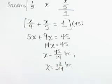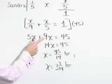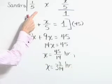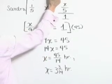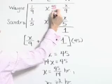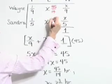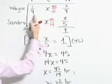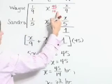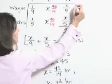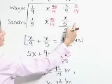Now, quickly, as a last step, let's check this out and see if that value makes sense. And I'm going to do that just by looking at our table. If the time X is 45 fourteenths for both Wayne and Sandra, then the amount of work done by Wayne is one ninth times 45 fourteenths. That's five fourteenths of the job.